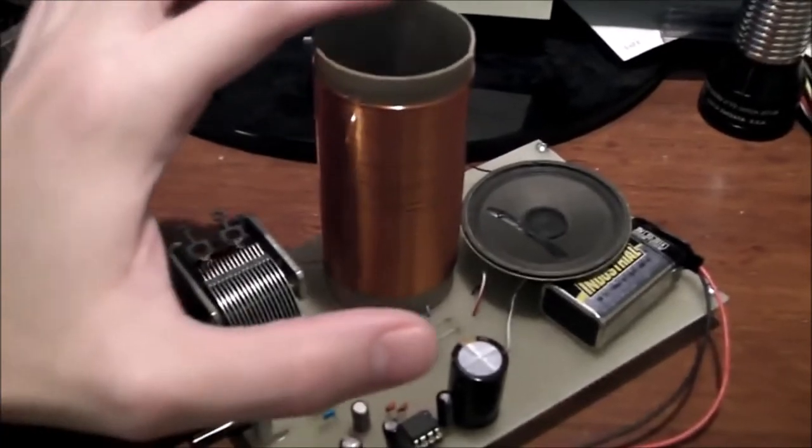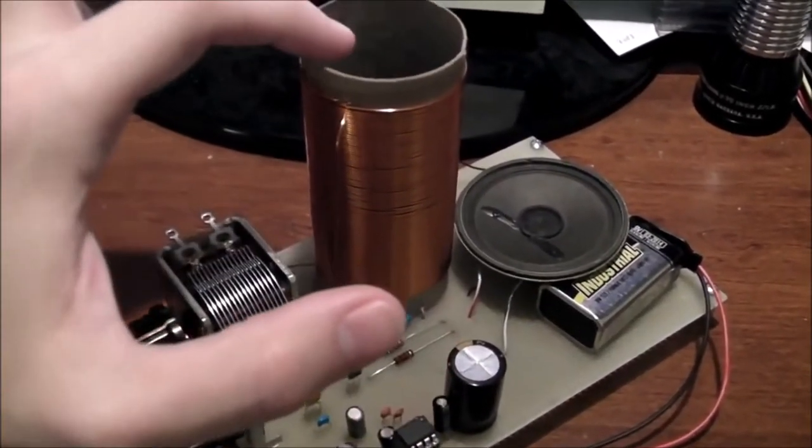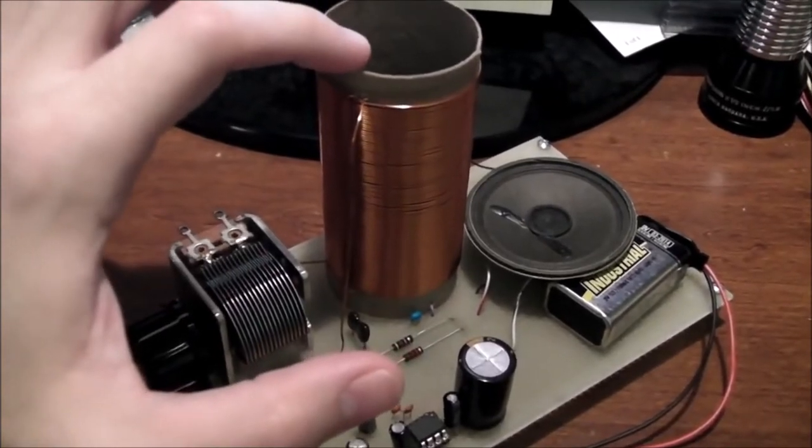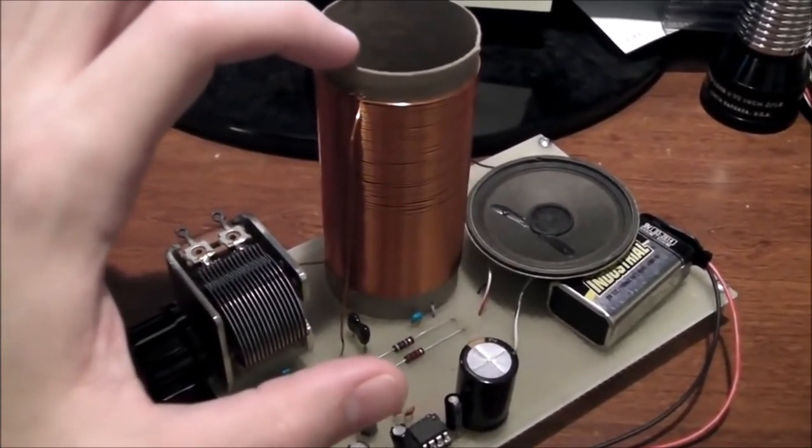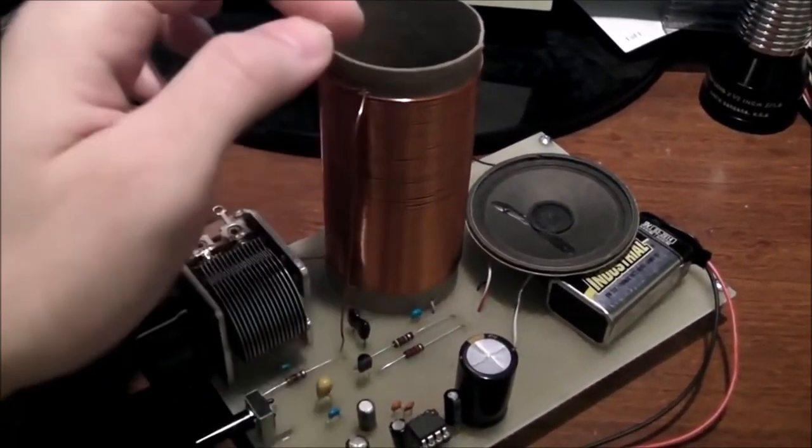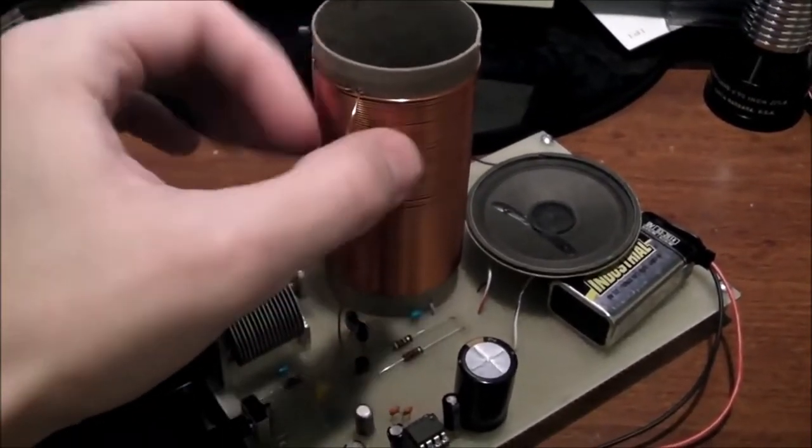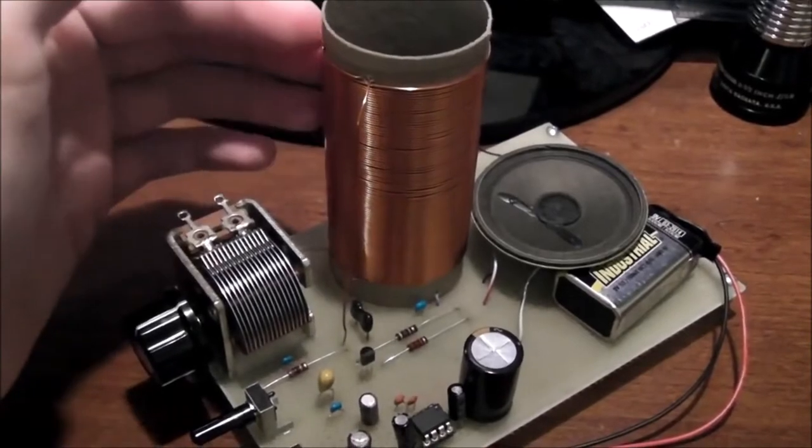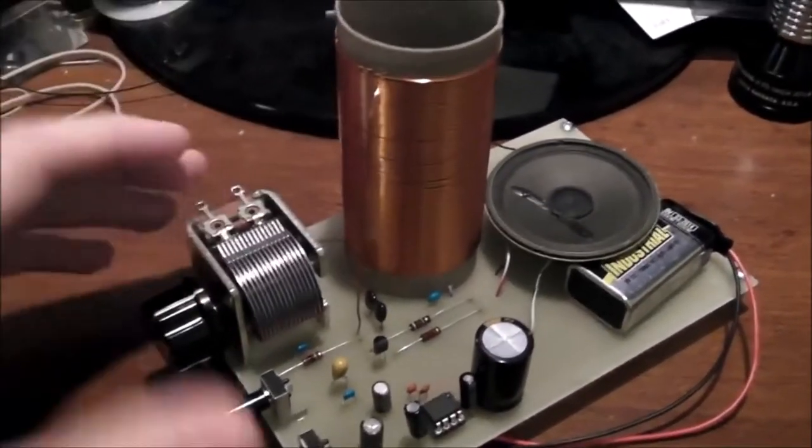Coil form is the classic toilet paper tube. This is actually a part of a paper towel roll from commercial grade paper towels, the rough brown paper towels. This is actually a little bit thicker cardboard than from a standard toilet paper roll, and so when you wind this 22 gauge magnet wire on it, it doesn't tend to collapse like the thinner cardboard on the toilet paper rolls does.